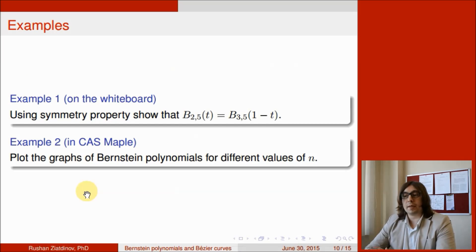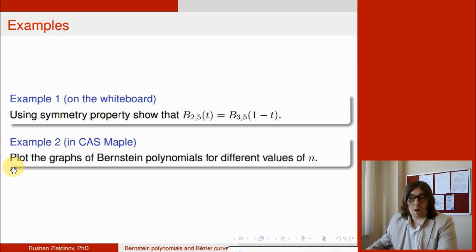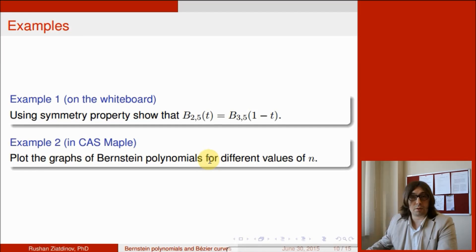Now let's discuss several examples. Example 1 will be shown on the whiteboard. Using symmetric property, I will show that b_2,5 of t is equal to b_3,5 of 1 minus t. And example 2 will be done in computer algebra system MAPLE. I will teach you how to plot the graphs of Bernstein polynomials for different values of n.